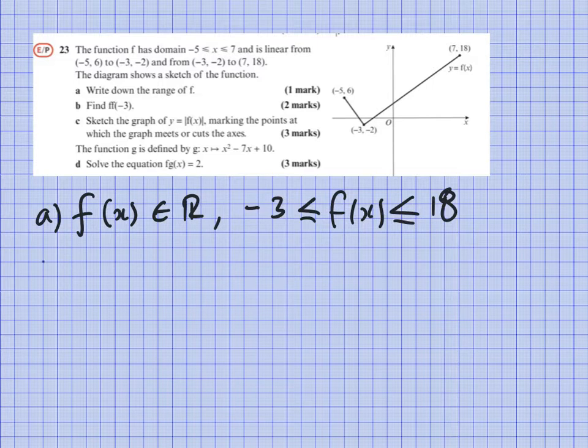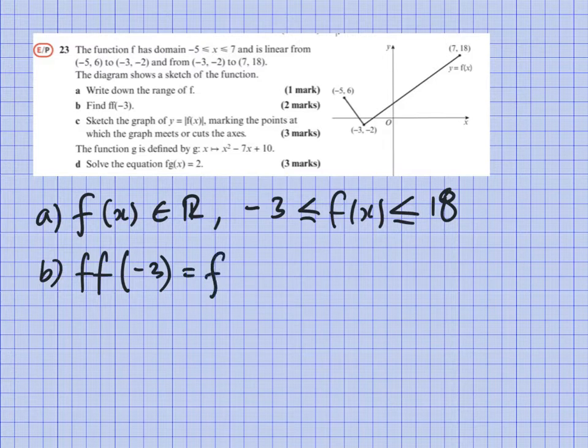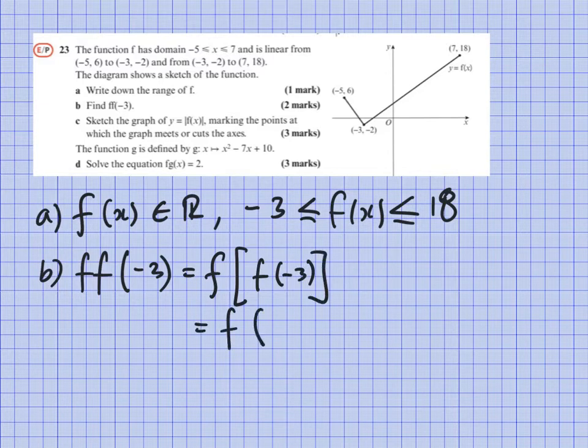Part b: find f(f(-3)). Remember what we're trying to do here is rewrite this as f(f(-3)), and that's equal to f(-2). Because if you look here we can see that if x is -3, then f(x) is -2. That's nice and easy. So now we need to solve what is f(-2).